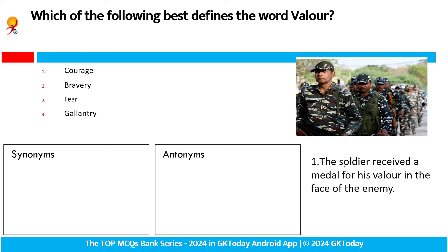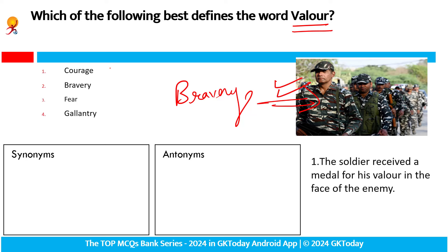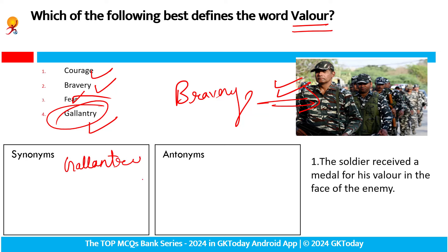Which of the following best defines the word 'weller'? Weller ka exactly meaning kya hota? Weller yani bravery — this word is used for bravery. Courage, bravery, gallantry — gallantry award diye jate hain, brave award. Fierce ka antonym. Synonym ho jaayengi iske: gallantry, brave ke liye audacious, bold, courageous.